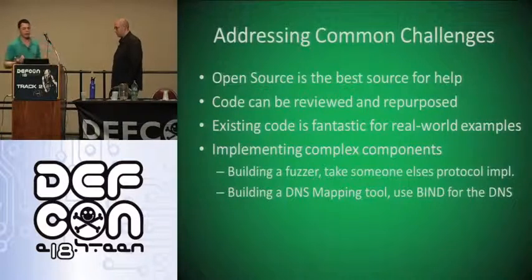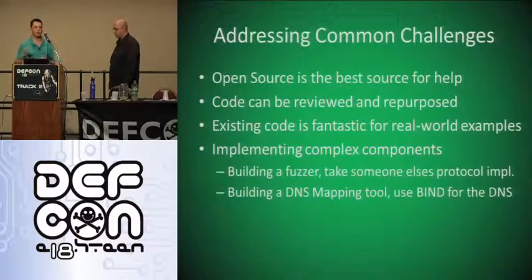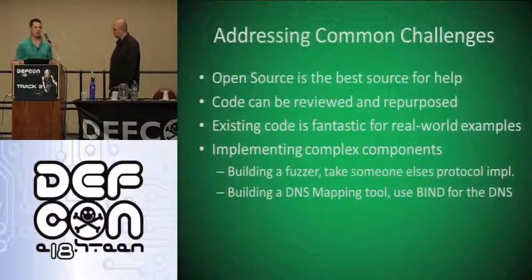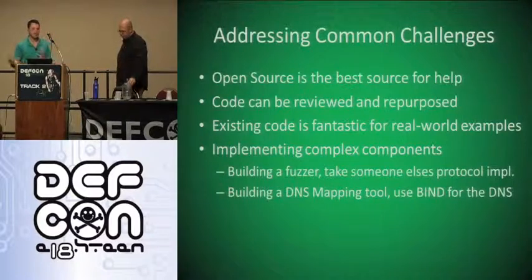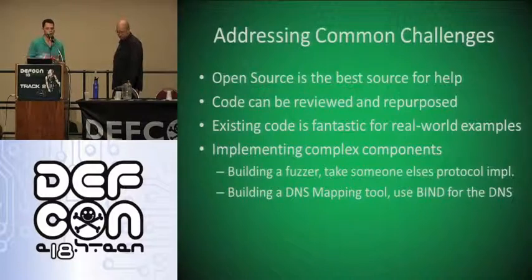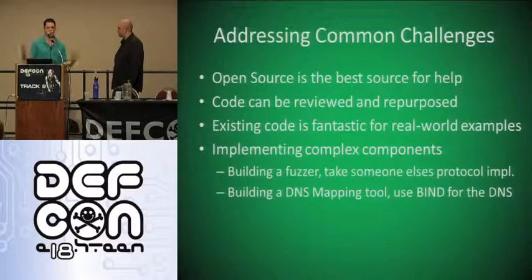Going back to what we've just said, there are some ways to address these challenges. Open source is a great source for figuring out how to do certain things — for instance, making a client talk to a server. Instead of rewriting the entire protocol, you just go and repurpose some code from another person's project. You can review the code, figure out what's usable and what's not, and just strip out what you need and get rid of the rest. The existing code base is always fantastic, and this really helps when you're starting to think about developing complex components. For instance, if you want to build a DNS mapping tool, you don't go through and implement the entire DNS protocol — you download Bind's implementation, strip out their stuff, take their protocol, and implement it into your project. Same thing with building something like a fuzzer.